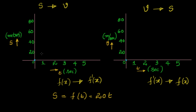Let's take a simple function for distance: s = 20t, which is a straight line (y = mx). Plotting the values: at t = 1, s = 20; at t = 2, s = 40; at t = 3, s = 60; at t = 4, s = 80. So s = 20t gives us a straight line.